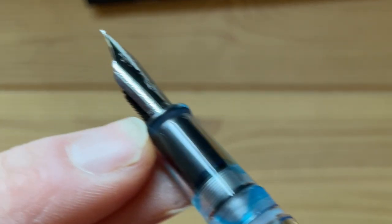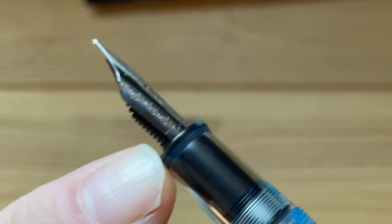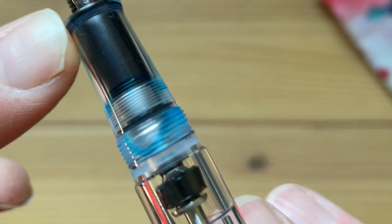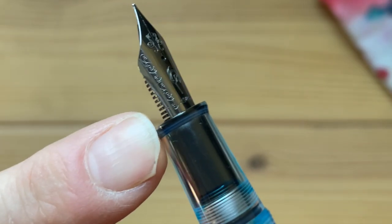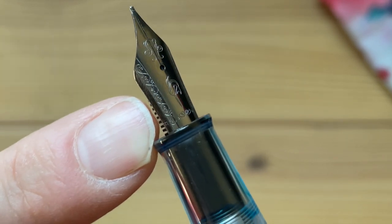On the side here, this is where you can actually see... Right here, you can see that it is a fine nib.